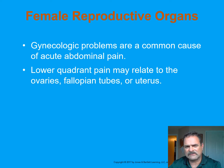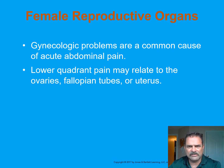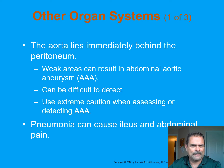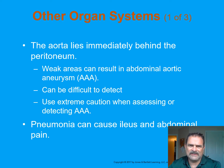Female reproductive organ problems are a very common cause of acute abdominal pain. Lower quadrant pain may relate to the ovaries and fallopian tubes — gynecological emergencies are covered in depth in Chapter 23. Regarding other organ systems, the aorta lies immediately behind the peritoneum. Weak areas can result in abdominal aortic aneurysms, or AAAs.